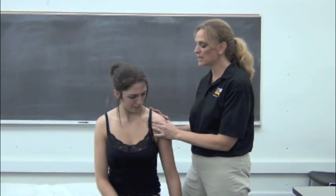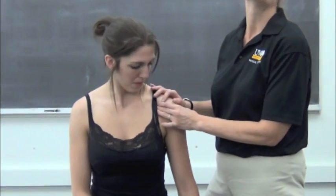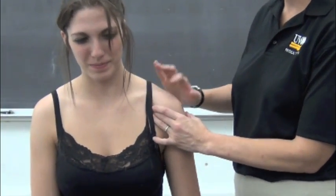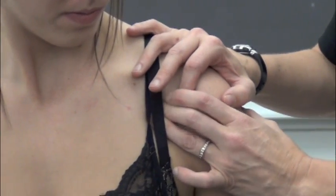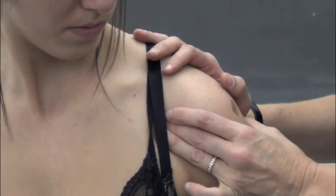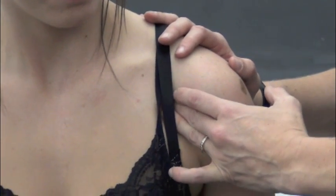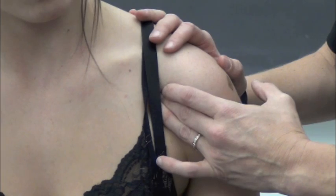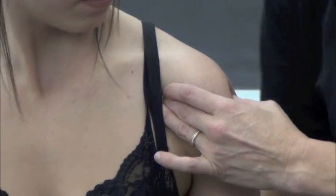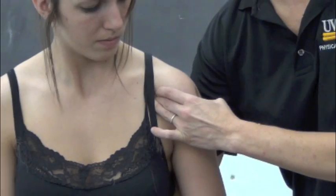Another structure you can palpate on the anterior aspect of the shoulder is the anterior border of the glenoid fossa. Start by finding the coracoid process, then with your other hand find the humeral head — the anterior rim of the glenoid fossa is between those two structures. You need to palpate relatively deeply, changing the angle of your hand so it is no longer parallel to the skin. You'll know you're on the glenoid fossa and not the humerus because when you rotate the arm, that structure does not move.